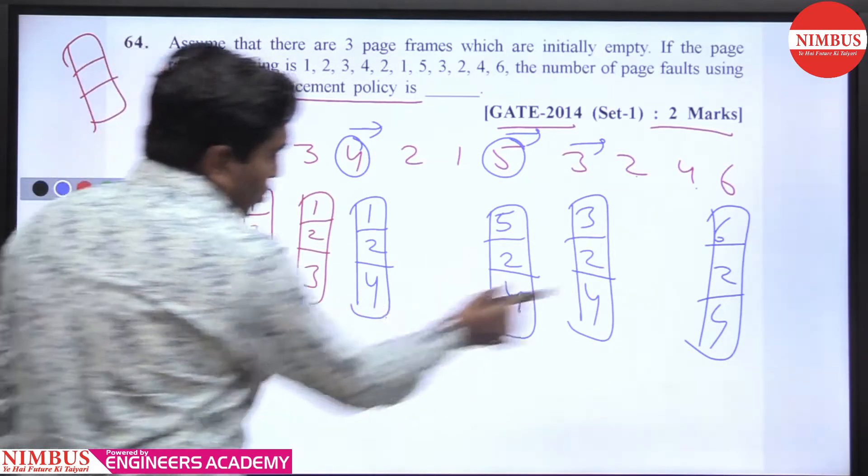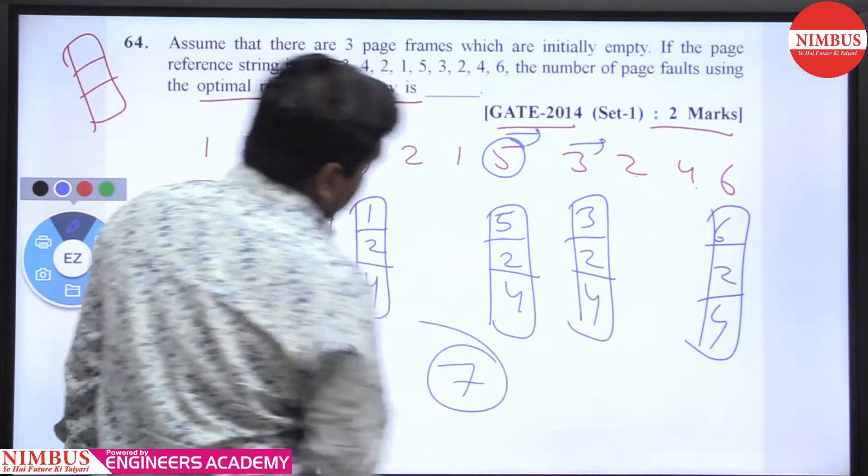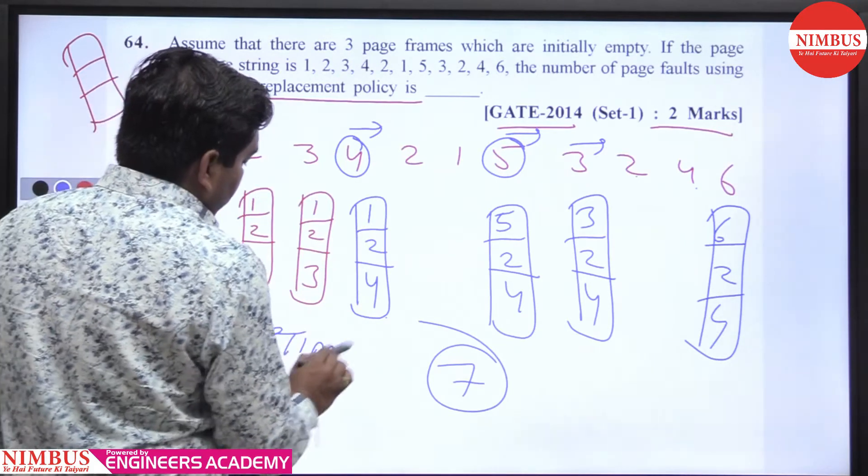So the total number of page faults is 7. Apply the optimal replacement policy and calculate: the number of page faults is 7.